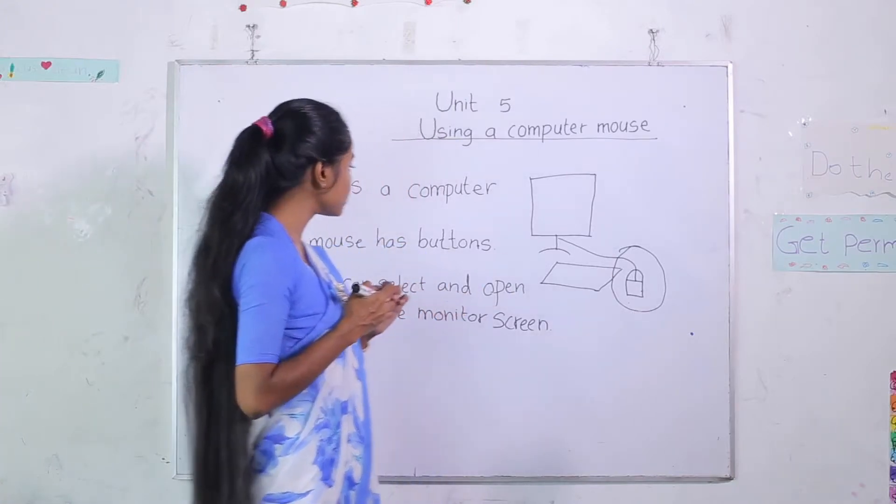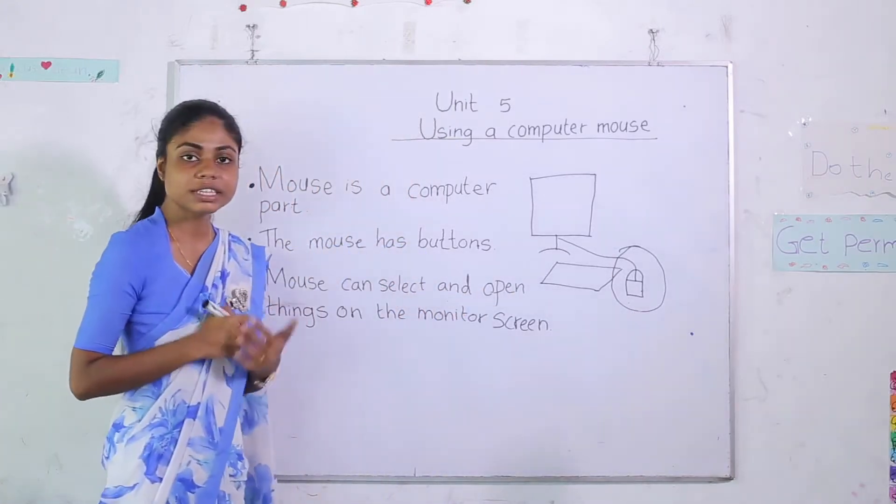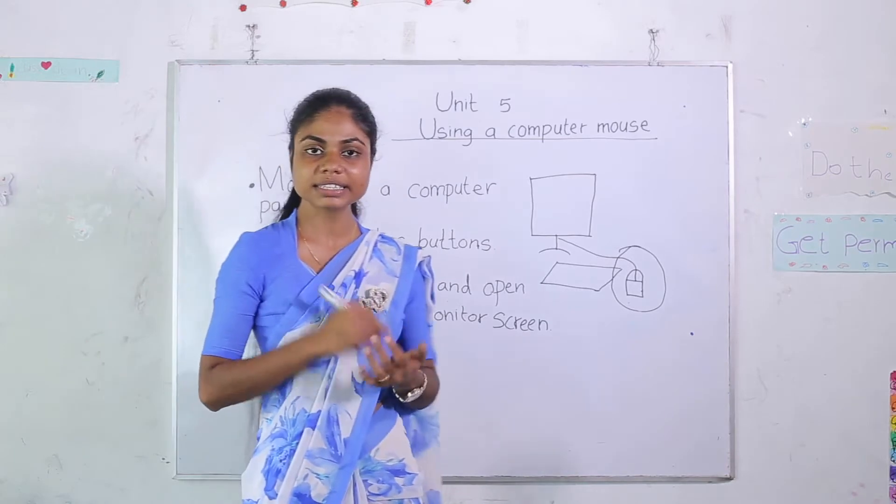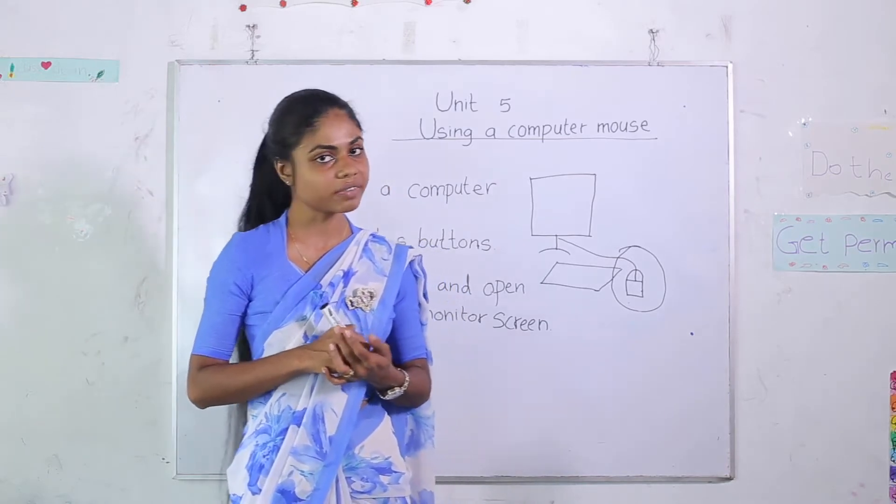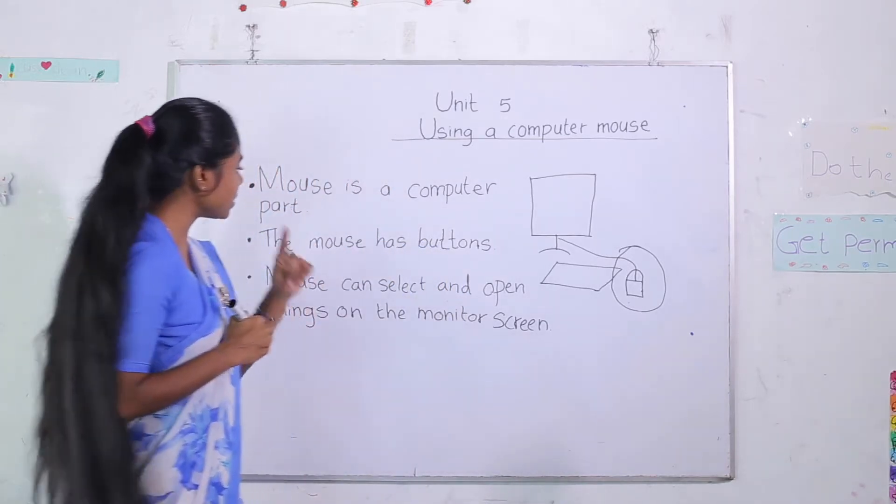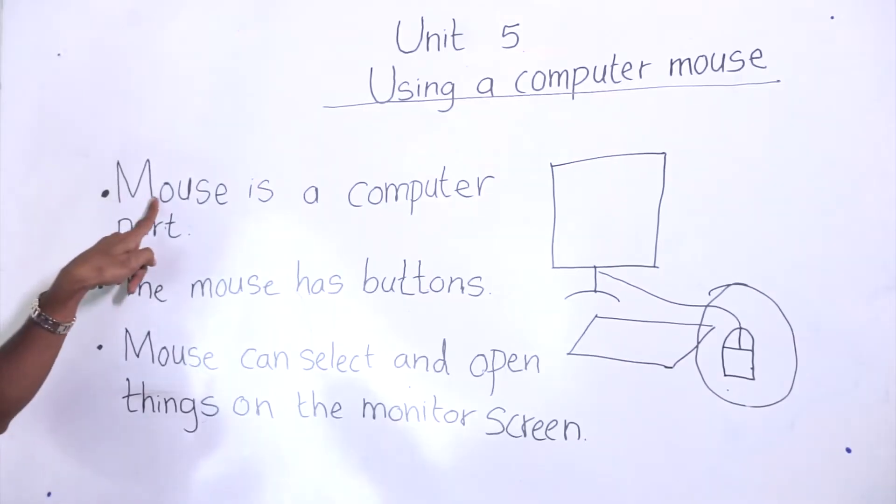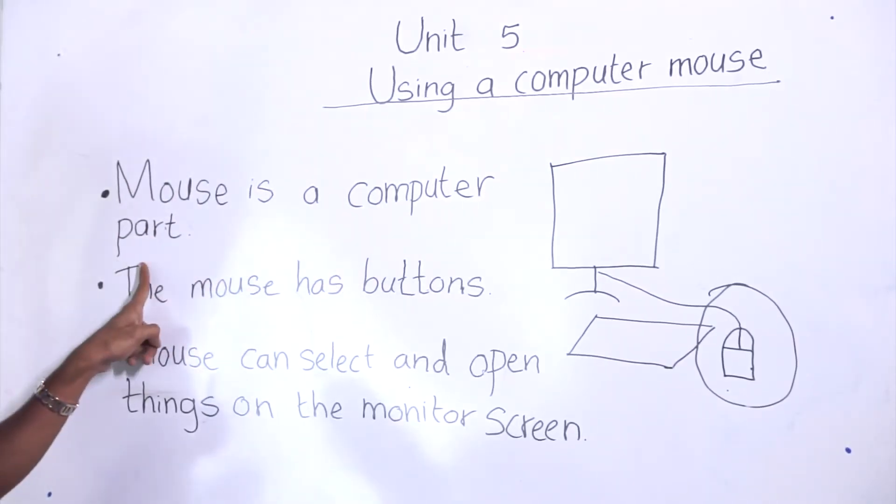It's called mouse. Now take your writing book. Let's review your points you have written. First point is mouse is a computer part.